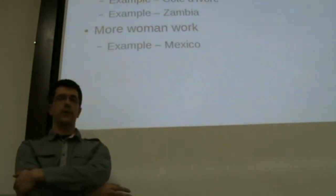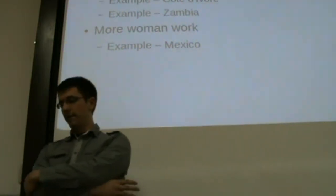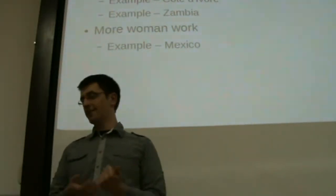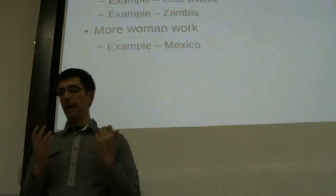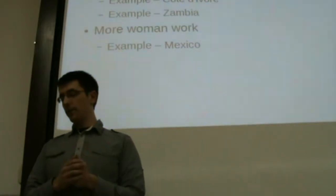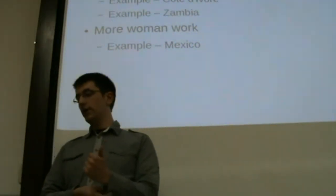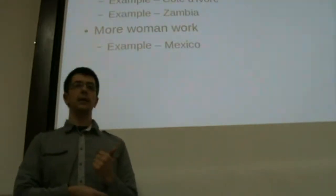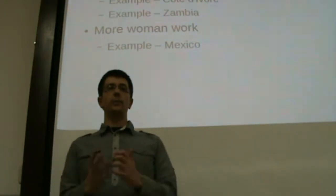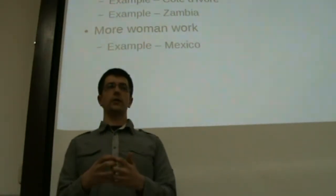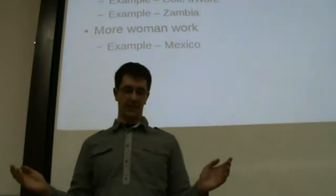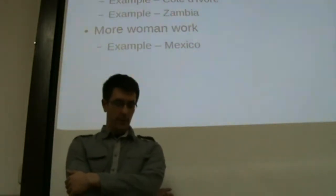Now I'm going to talk about some factors that are really important in developing. Firstly, industrialization — it means that you have more industry in the country. Why is industrialization better for developing countries? For a couple of reasons. Firstly, because we have less resource-based economies. Resource-based economies are economies where the biggest amount of GDP is based on trading with resources. We have two examples here. One example is Zambia, where 80% of GDP comes from copper.